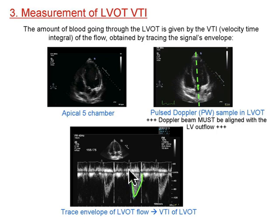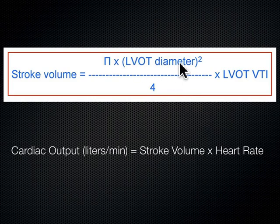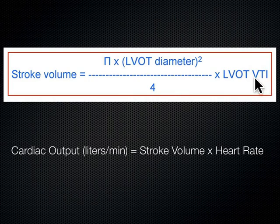To summarize: we get the LVOT diameter, measure that ourselves, give that to the machine. The machine squares it, times pi, divided by 4, then multiplies it by the LVOT velocity-time integral — that gives us stroke volume. And since it's watching the pulsations of the heart it knows the heart rate, so it takes stroke volume times heart rate and gives you cardiac output at the bottom of the screen.